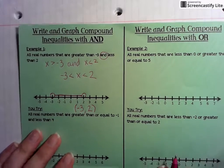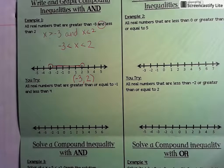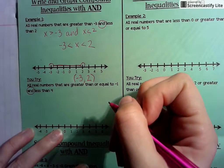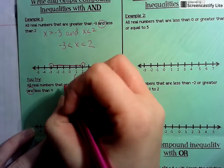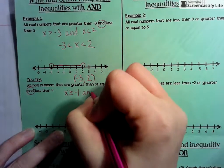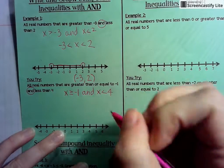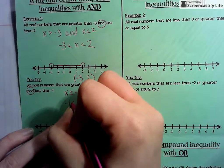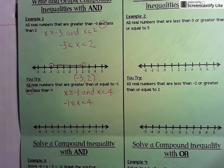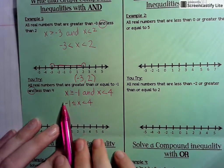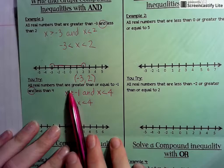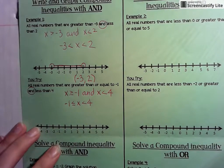For the next one, you have all real numbers that are greater than or equal to negative 1 and less than 4 — 'and' is the keyword. So we have numbers greater than or equal to negative 1 and numbers less than 4. You could also write this as negative 1 is less than or equal to X which is less than 4, written from least to greatest, which means the same thing.